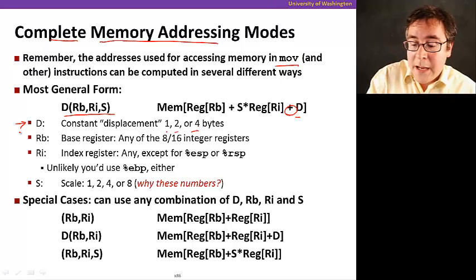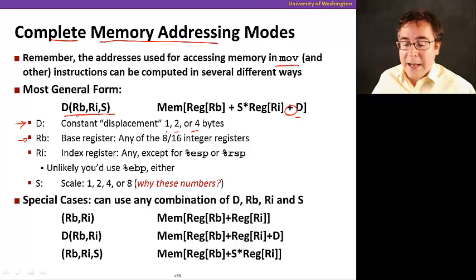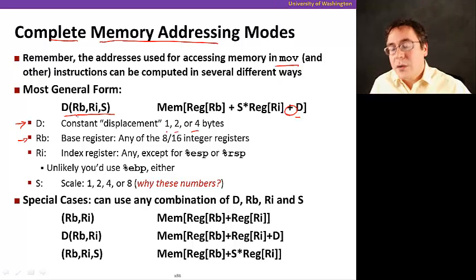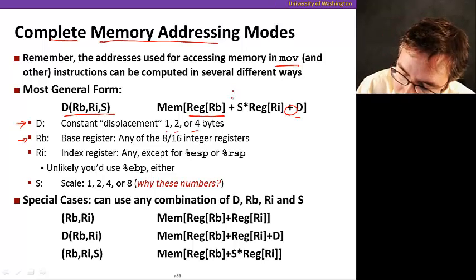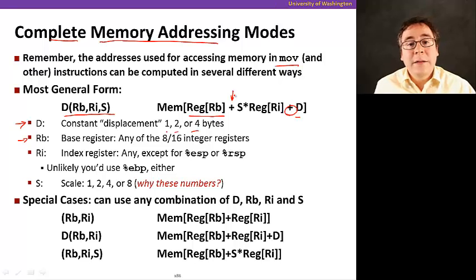So now the other parameter here, RB, is a base register. It's called a base register because we're adding to that reference point. That's the base register where our address starts to be computed from.